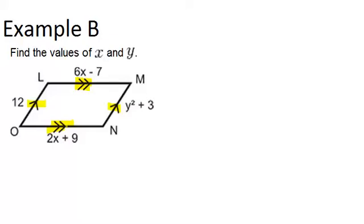Because it's a parallelogram, that means that the opposite sides must actually be congruent. So this side, LM, is congruent to ON, and NM is congruent to OL. So we can set up two equations to solve for X and Y.